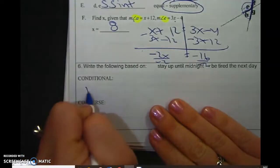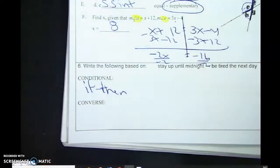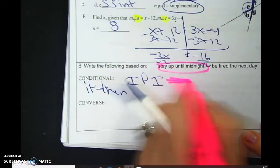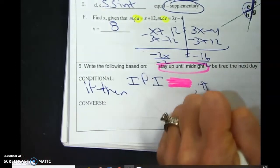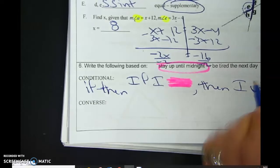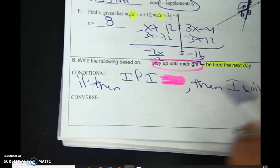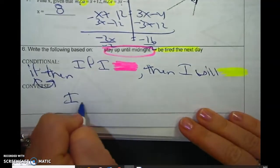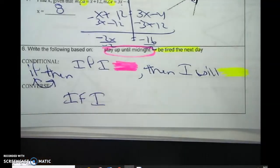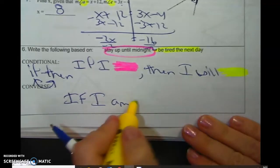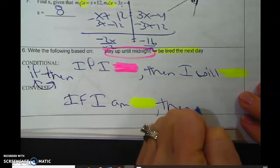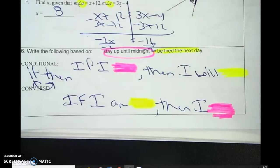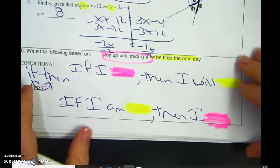So conditional. Conditional means if, then. If I stay up until midnight, then I will be tired the next day. Converse means you switch the if and the then. So if I am tired the next day, then I stayed up until midnight. It's multiple choice, so you're just going to find the one that works. But it's really easy to make a mistake.